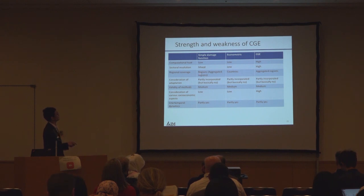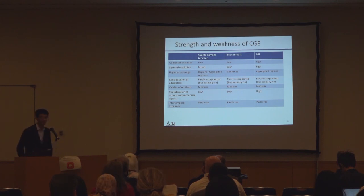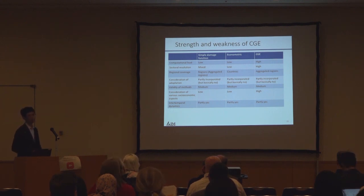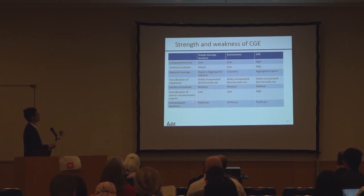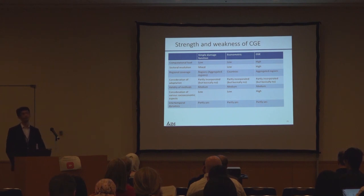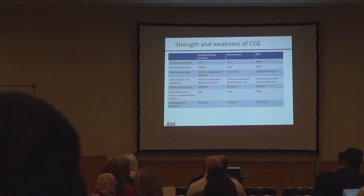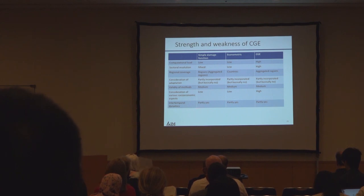Regional coverage: econometric has done country-level; we do aggregated regions like 17 regions. Adaptation is partly incorporated — I think this remains a challenge for every approach in this field. Validity of the method: I think it's still medium and we need to work more. Consideration of various socioeconomic aspects: we could explicitly consider not only GDP or population changes, but also economic structures and adaptive capacity in the agriculture sector — so I say it's high. In temporal dynamics, we do a recursive dynamic model, so it's partly addressed, and the others are also partly so.